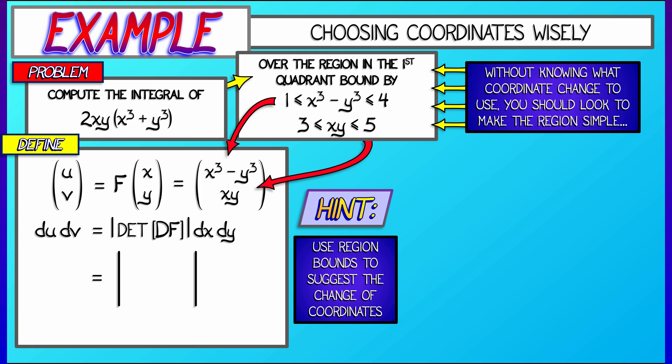When I take the partials with respect to x, I get in the first column 3x squared and y. Then in the second column, I take the partials with respect to y to get minus 3y squared and x. Now, taking the determinant of that and multiplying by dx dy, I get 3 times quantity x cubed plus y cubed in absolute value times dx dy.